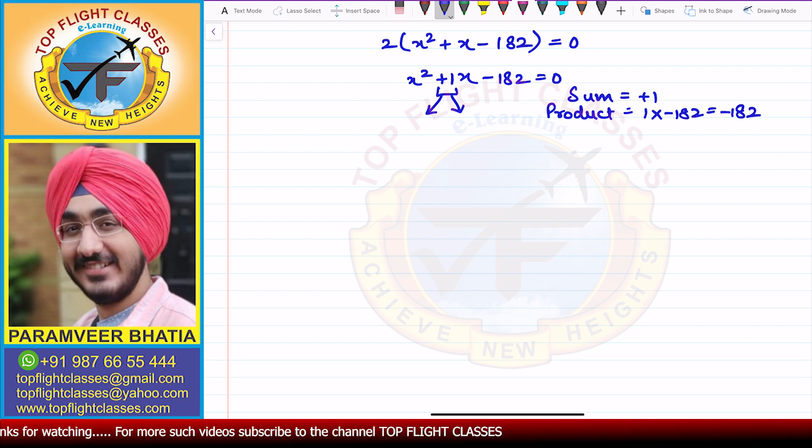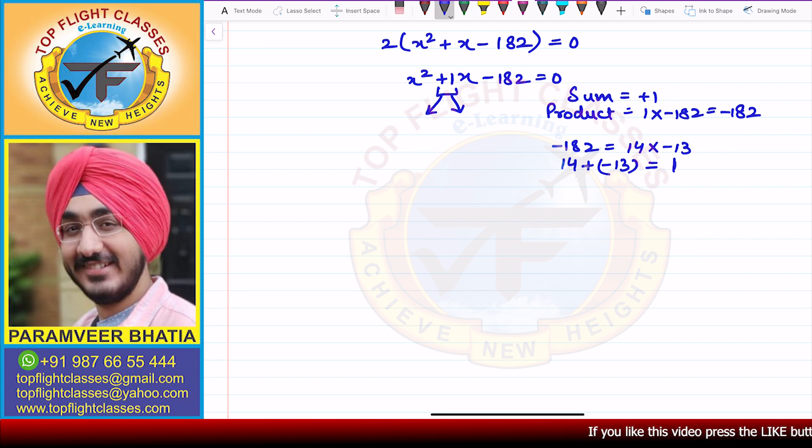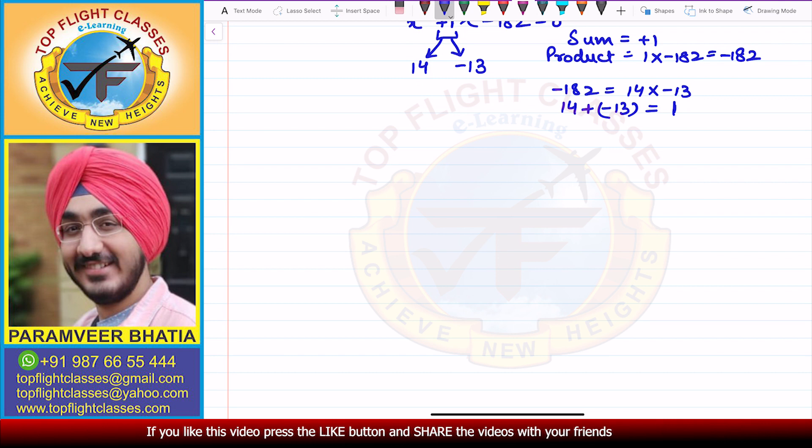Now, in the previous question only, that is question number 3, which we can see in the description. In that question, we have taken out that minus 182 is equal to 14 into minus 13. And 14 plus minus 13, if we do that, our sum will be equal to plus 1. So that means we can use these two factors in this equation as well. So there are two factors that are plus 14 and minus 13 to split the middle term. So here, what will become our equation? What will become x square plus 14x minus 13x minus 182 is equal to 0.